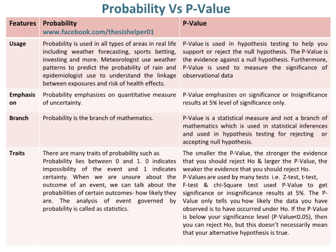Whereas, the smaller the p-value, the stronger the evidence that you should reject H₀, and the larger the p-value, the weaker the evidence that you should reject H₀. P-values are used by many tests — Z-test, T-test, F-test, and chi-square test — to get significance or insignificance results at 5%. The p-value only tells you how likely the data you have observed is to have occurred under H₀.